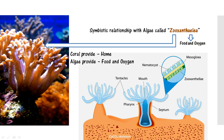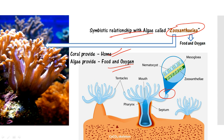These polyps share a symbiotic relationship with a tiny single-cell algae called zooxanthellae that live on the tissues of the polyps. Polyps provide a home for the algae, and the algae produce food and oxygen through photosynthesis. Corals get their beautiful colors from the zooxanthellae living within their tissues.